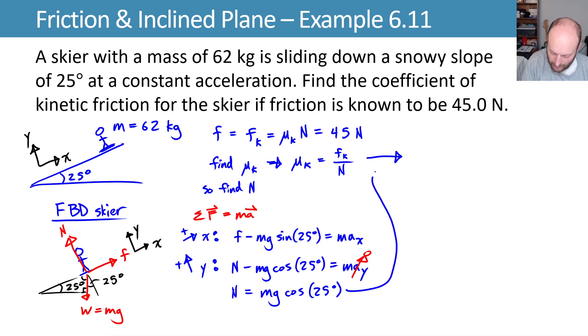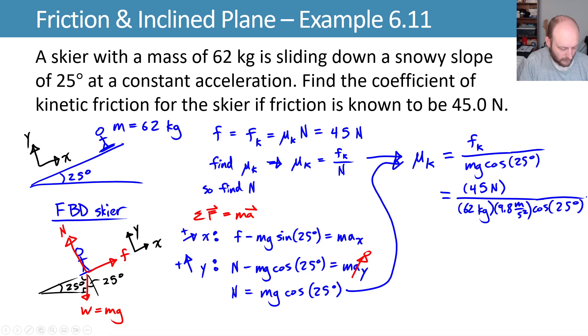We can now combine that with what we had from before. So we'll take this and this and we'll write that our μₖ, which is what we're trying to find, is equal to my force of kinetic friction, which I know is 45, divided by mg cos(25°). We can now plug in all the numbers: 45 newtons for the force of kinetic friction, 62 kilograms for the mass, 9.8 meters per second squared for the gravitational acceleration, and the cosine of 25 degrees. And evaluating that, we end up with a coefficient of kinetic friction of 0.082.